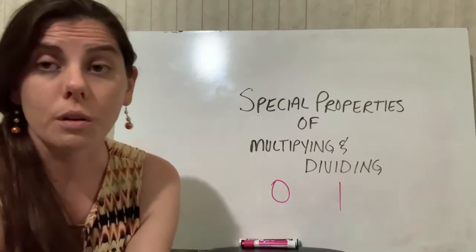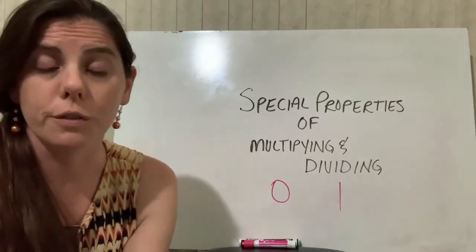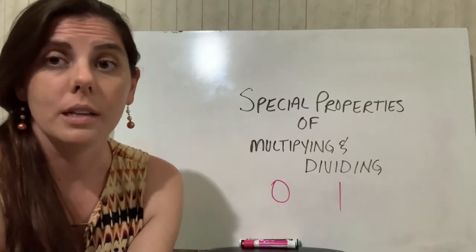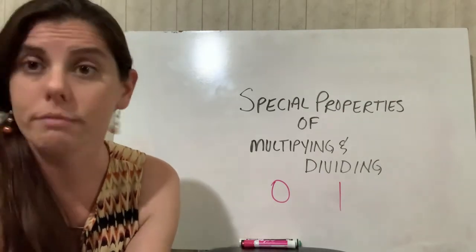Or if I have 0 groups of 34, so 0 times 34. If I have 0 groups of 34, then how many groups do I have? Well, 0.